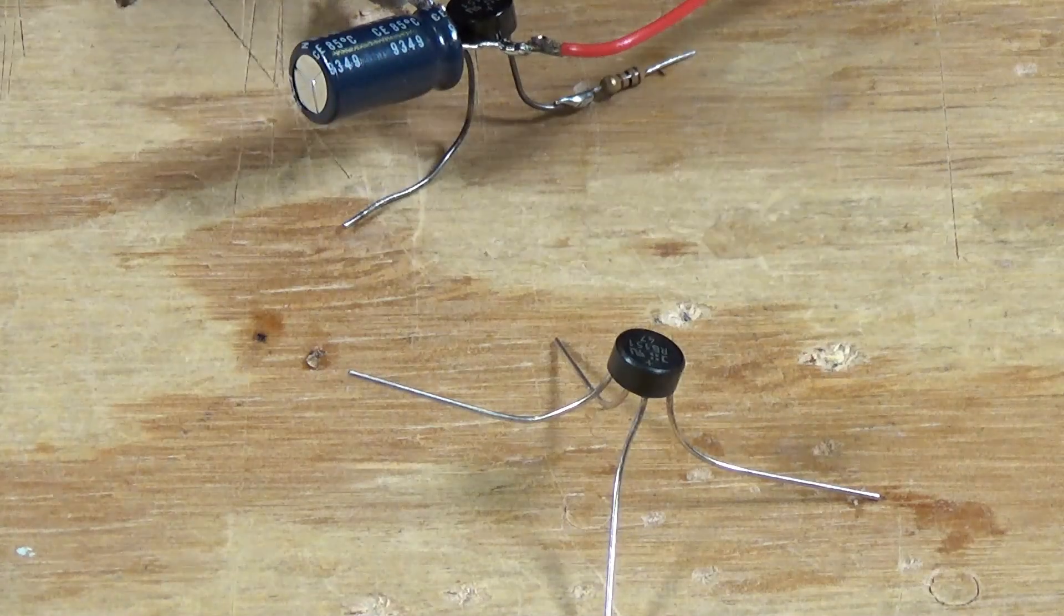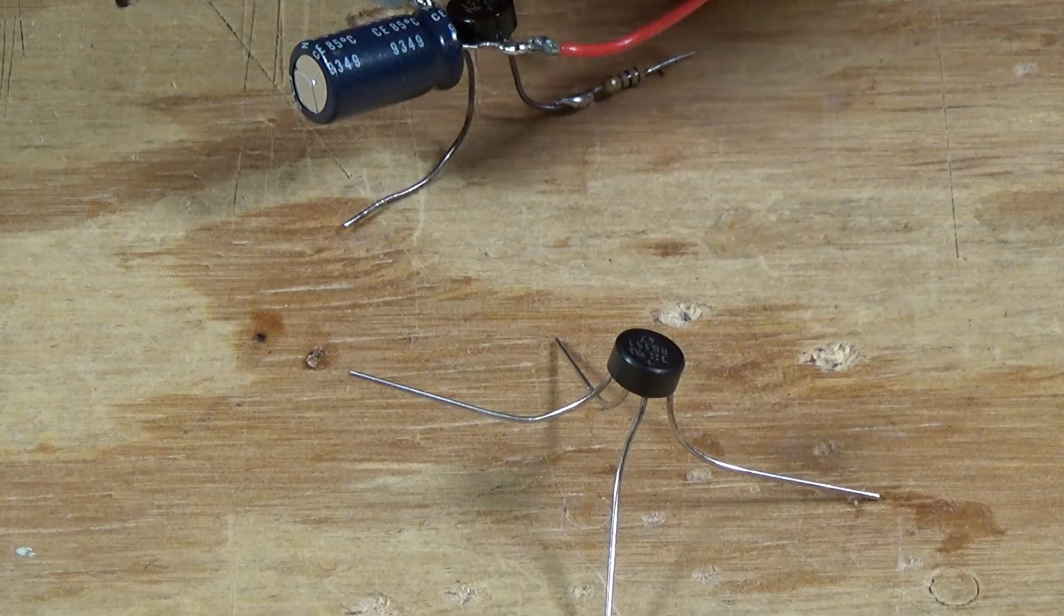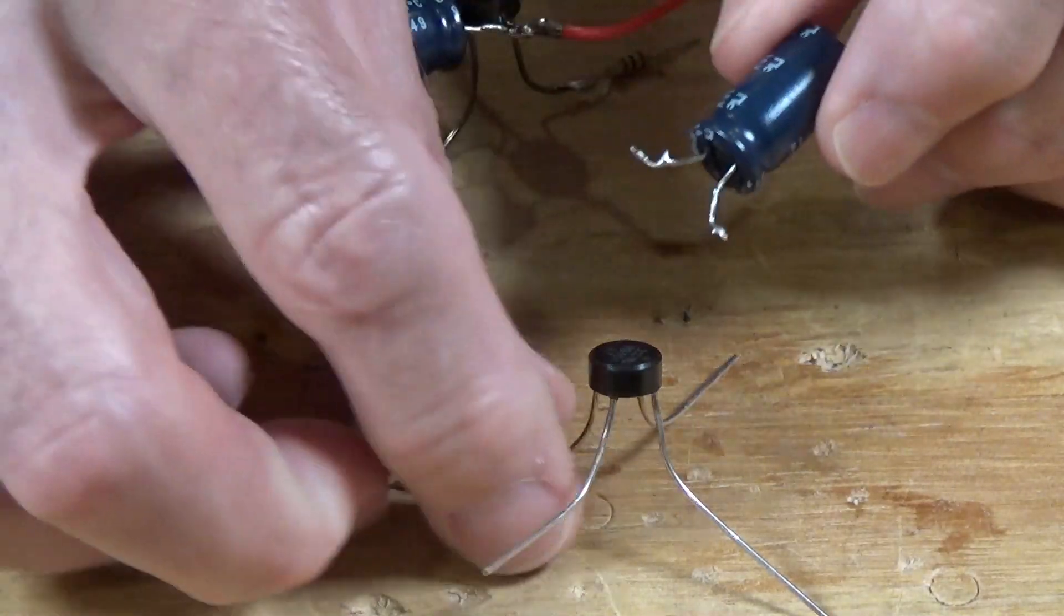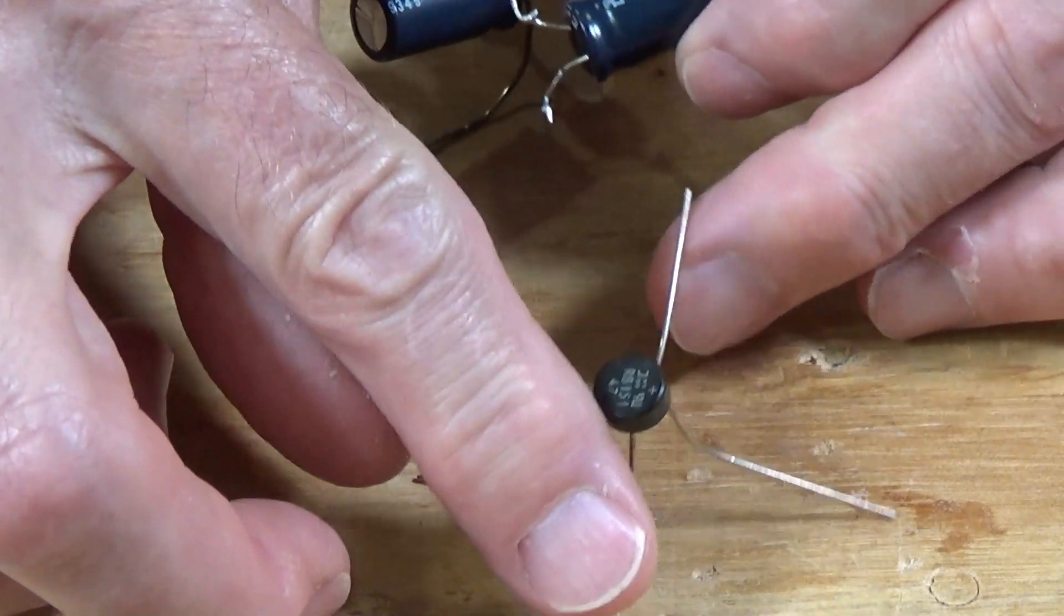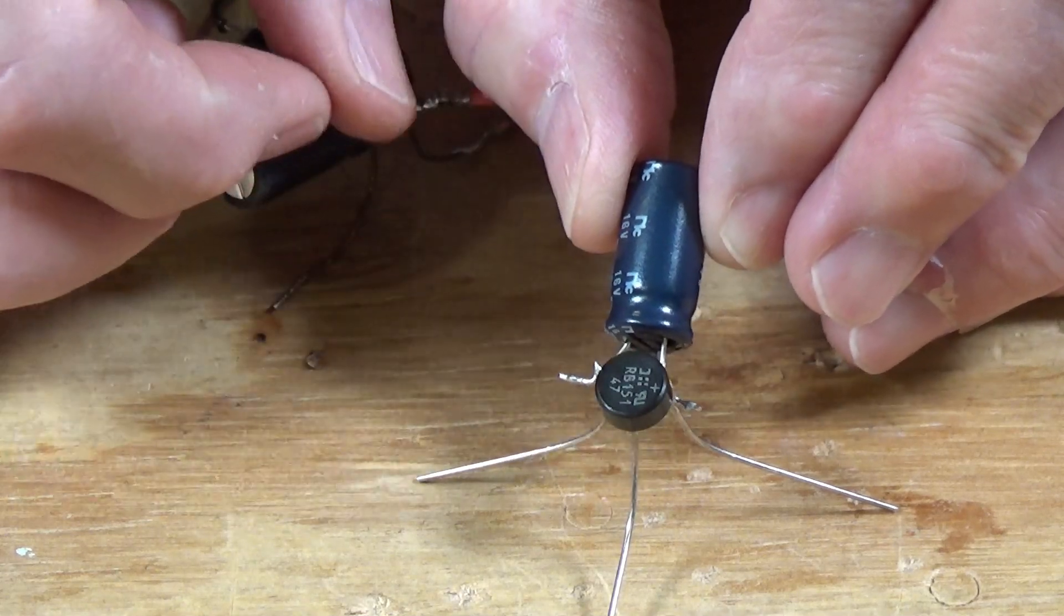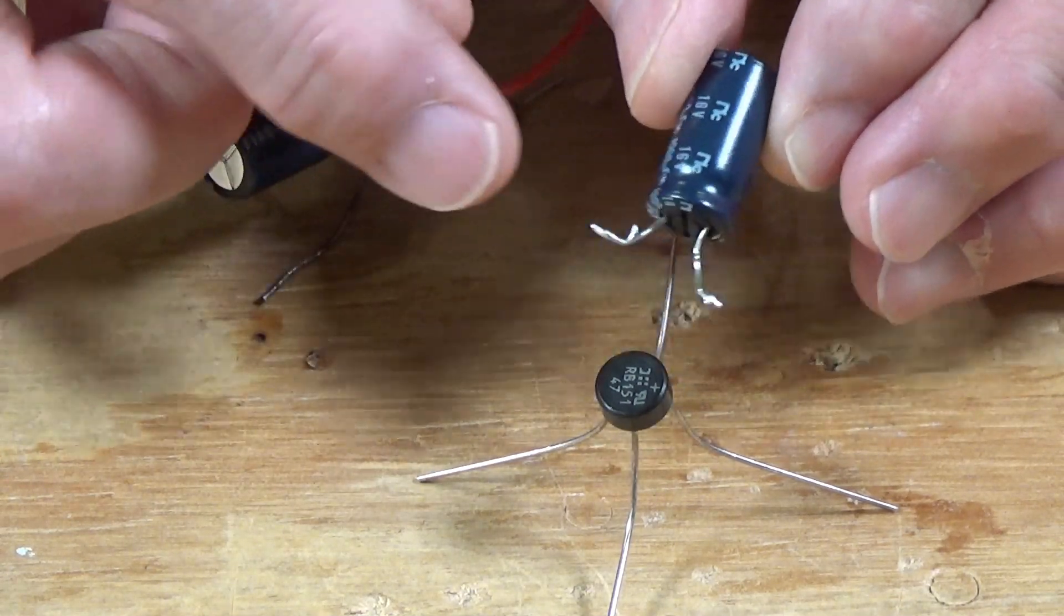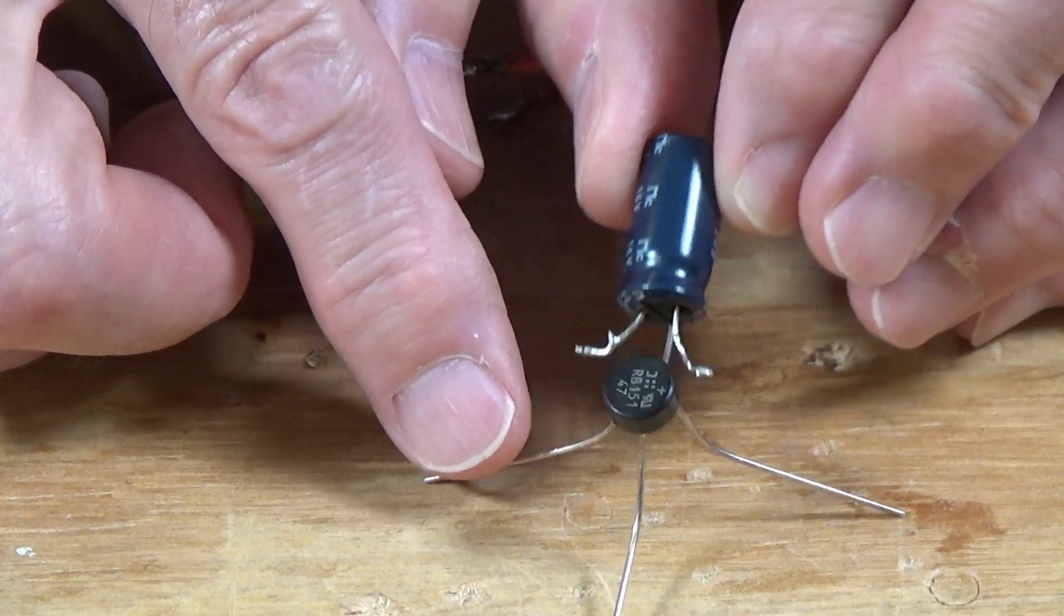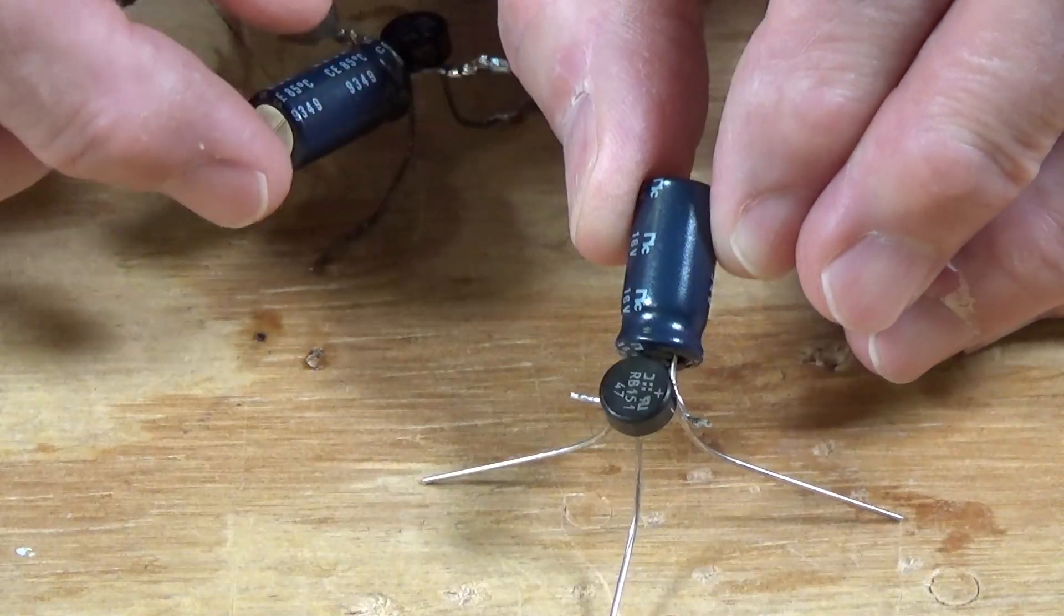Then the next thing I've done is I've taken the capacitor. And here I've got it laid out so that this is positive, that's negative. And I'm going to wire that capacitor to these legs, the plus and the minus, keeping the negative stripe to the negative leg. So I'm going to put that one on first.